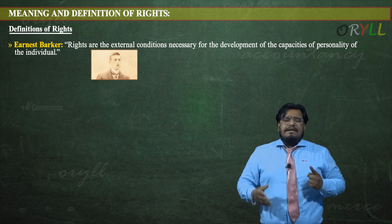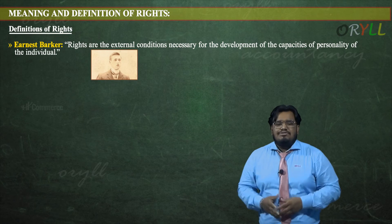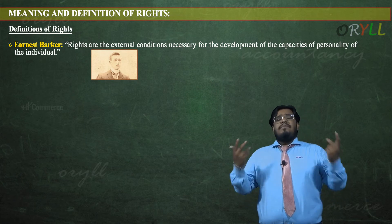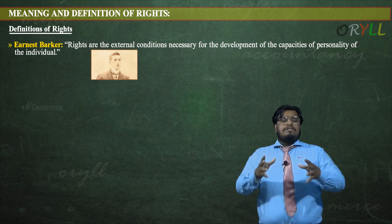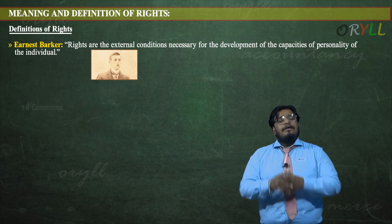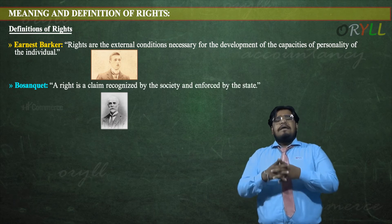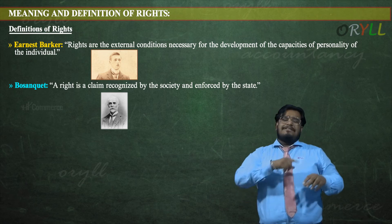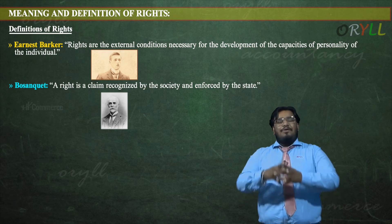Ernest Barker defined rights as: 'Rights are external conditions necessary for development of capabilities of personality of individual.' Similarly, Bosanquet defined: 'A right is a claim recognized by society and enforced by the state' — that is, it is a claim accepted by the society and enforced by the state or country.